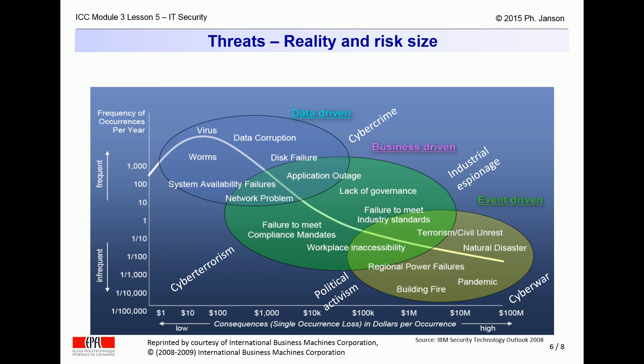All the kinds of threats we just saw are unfortunately very real and can have dramatic consequences. The financial risk they represent is measured by the product of their probability or frequency times the individual cost of any one occurrence. On the left of this graph you find threats of which the cost per event may be minor but the occurrence is so frequent that the resulting risk is not negligible. On the right side are threats that are more rare but of which the cost per event can be considerable. Towards the center, threats of which the cost and frequency may be modest but combined are still worth defending against.